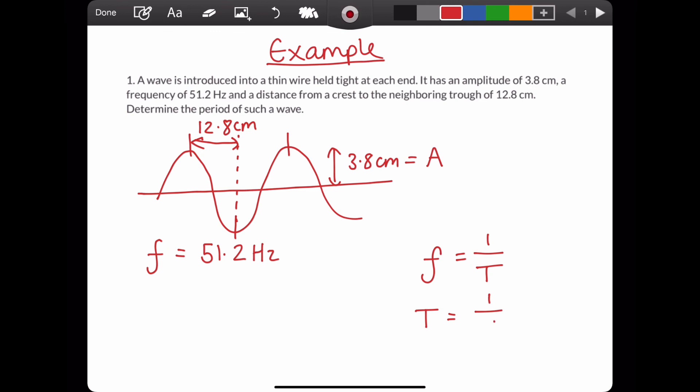So rearrange that. Time period is 1 over frequency. So putting the numbers in, 1 over 51.2. Put that into your calculator. You should get 0.0195 seconds.